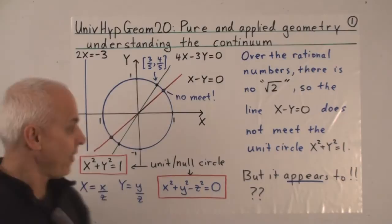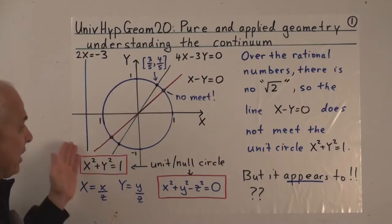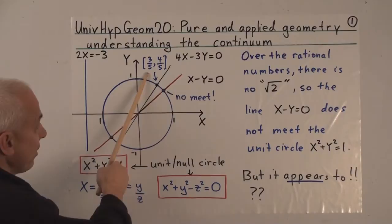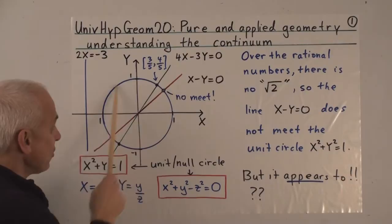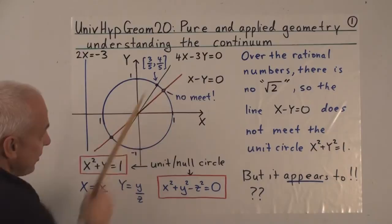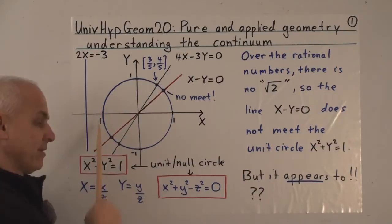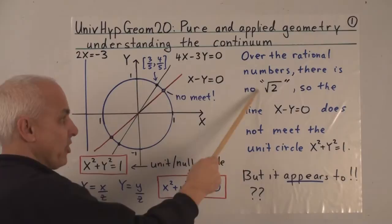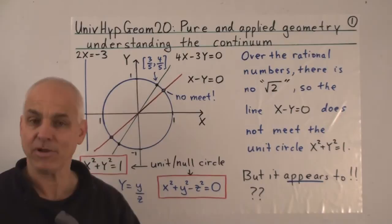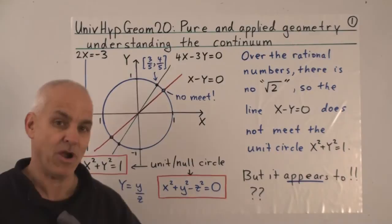I'm interested in the relationship between that circle and lines. The line x equals minus 3 clearly does not meet the circle. Here is a line whose equation is 4x minus 3y equals 0. It does meet the circle because we can verify that the point 3 over 5, 4 over 5 lies both on the line and on the circle — this is a null point. However, the line x equals y, or x minus y equals 0, does not meet the circle because in the rational number formulation there is no root 2. We're working over the rational numbers in our approach to hyperbolic geometry, and I claim this is the right way of thinking about geometry, and in fact mathematics more generally.